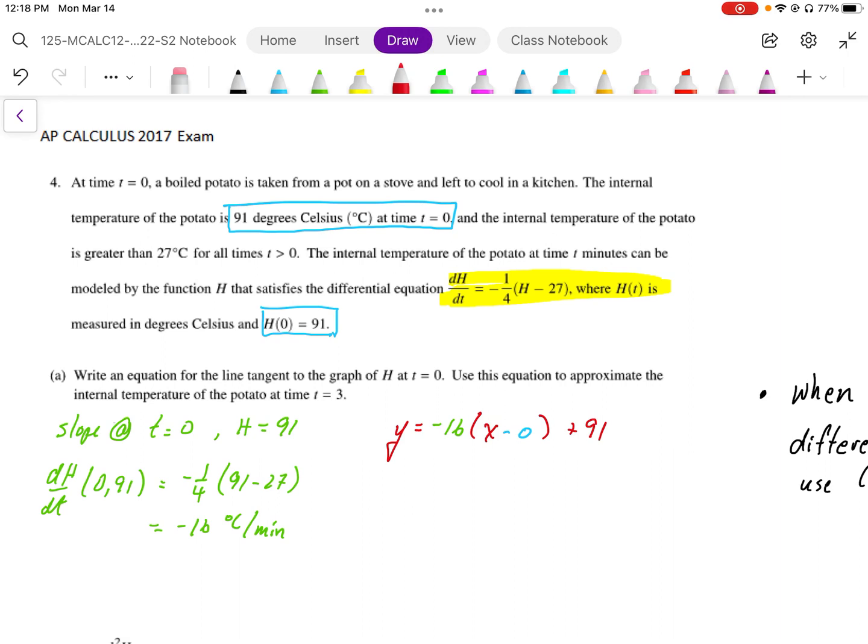We're going to use this tangent line equation to calculate or estimate the internal temperature at t equals 3, or in this case x equals 3. To calculate that, we get negative 16 times 3 plus 91. So the internal temperature works out to be negative 48 plus 91, which is 43 degrees Celsius.